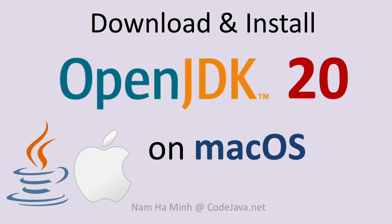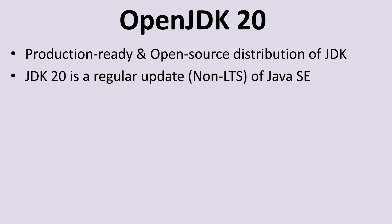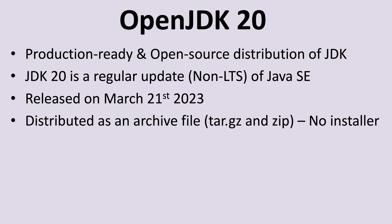Hello and welcome to the video: Download and Install OpenJDK 20 on macOS, with me Nam Ha Minh from CodeJava.net. OpenJDK 20 is a production-ready, open-source distribution of the Java Development Kit. JDK version 20 is a regular update, non-long-term-support release of the Java SE platform, released on March 21st, 2023. OpenJDK 20 is distributed as an archive file (.tar.gz) for Linux and Mac, and .zip for Windows.